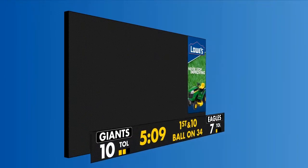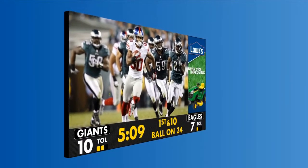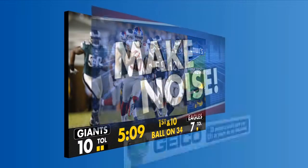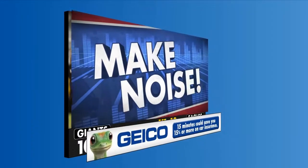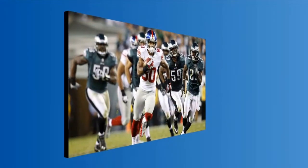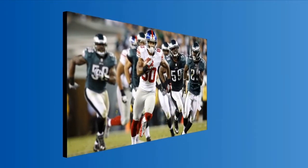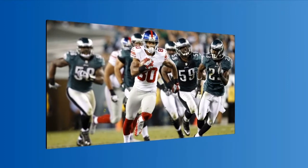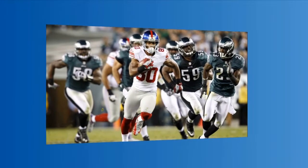Layering is delegated by zone size, so that the smallest zone is in the back and the largest zone is in the front. Since the full screen zone is the largest, it sits on top of the others and is only visible when content is actively playing in that zone.